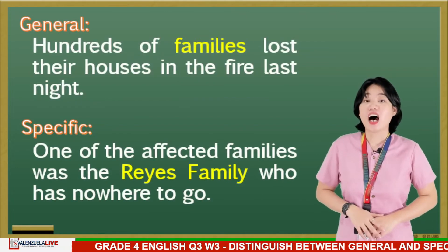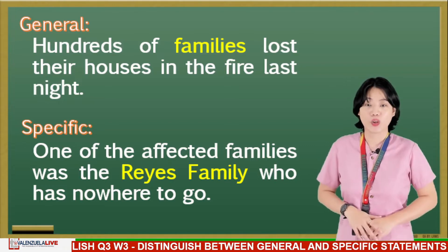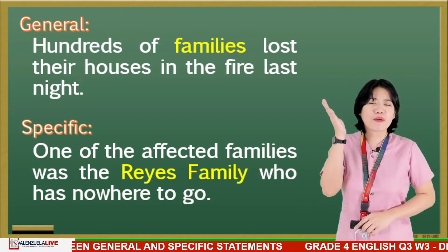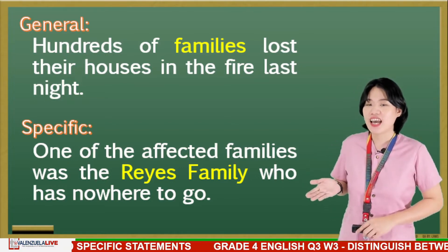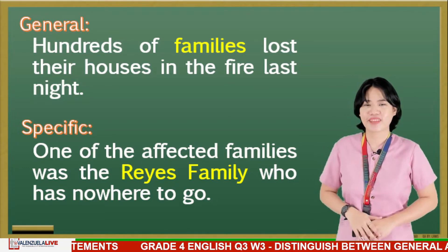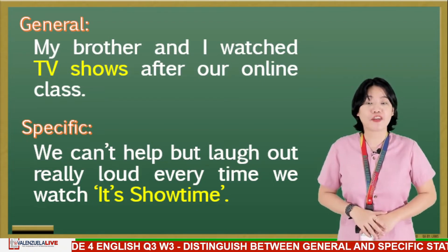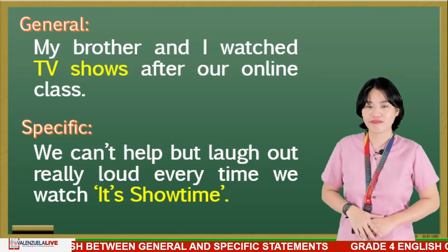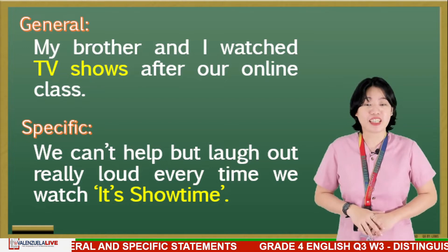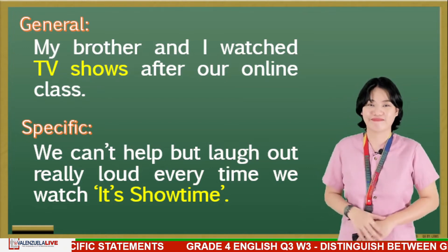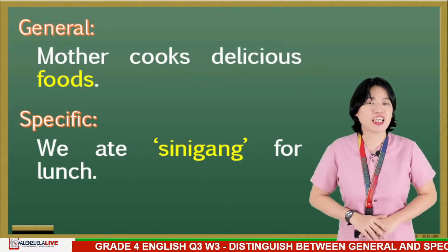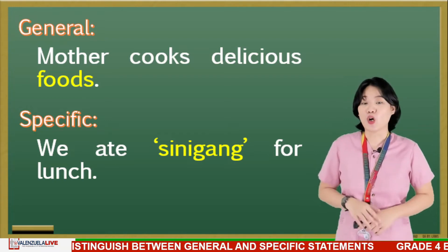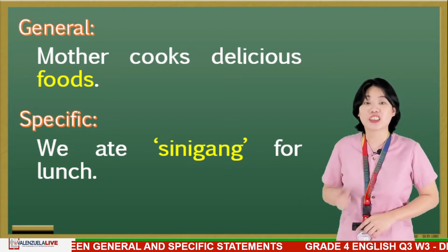Third: 'Hundreds of families lost their houses in the fire last night.' 'One of the affected families was the Reyes family, who has nowhere to go.' The word families is a broad concept, so we have Reyes family as its specific representation. Next: 'My brother and I watch TV shows after our online class.' 'We can't help but laugh really loud every time we watch Showtime.' There are a lot of TV shows, so the specific representation is It's Showtime. Fifth: 'Mother cooks delicious foods.' 'We ate sinigang for lunch.' We can think of various delicious foods, so that's general information, and sinigang is just one of those foods.